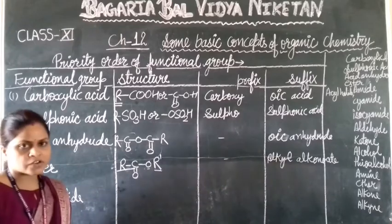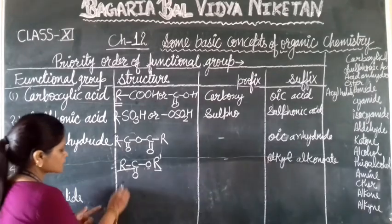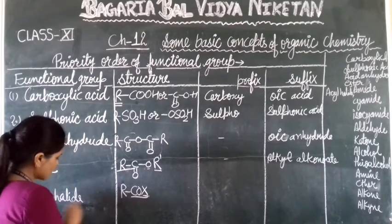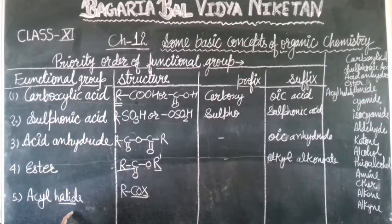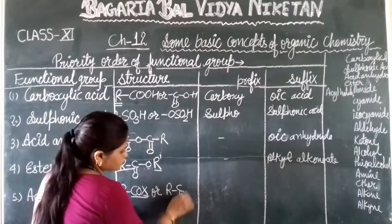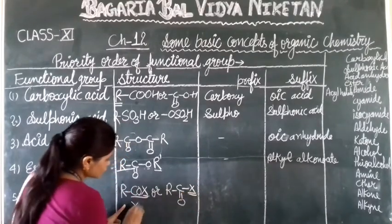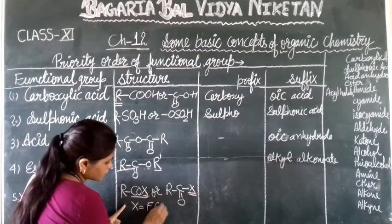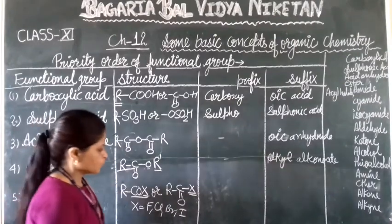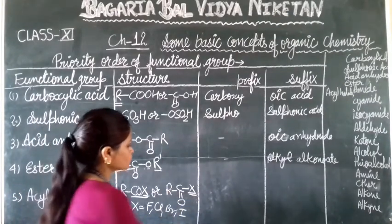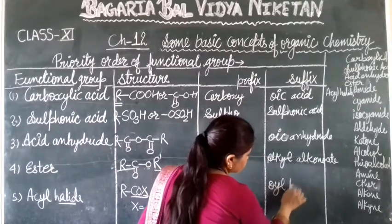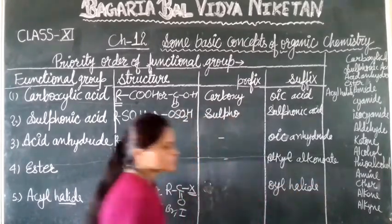The next functional group is acyl halide. Acyl halide is written as CO-X, where X is a halogen. X can be F, Cl, Br, or I. The suffix is 'oil halide' or 'oyl halide'.